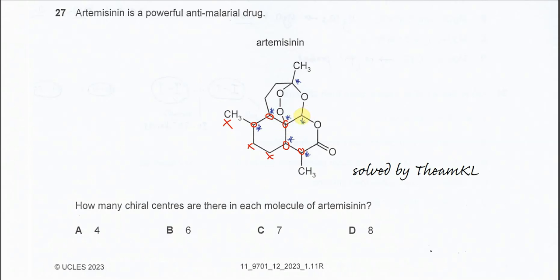This carbon also has one hydrogen and three groups — one, two, three — so total four different groups. So this is chirocarbon. This carbon just has three groups, so it's not chirocarbon.